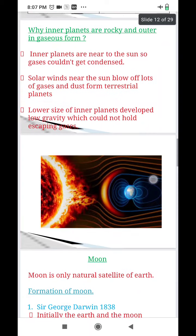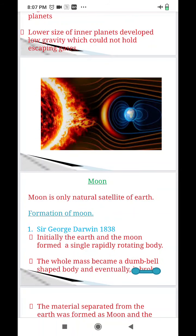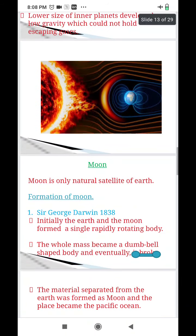Now, we will learn about the moon. As we know, moon is the only natural satellite of the earth. Now, there was some attempt to explain how moon was formed and one of those was by Sir George Darwin in 1838. He told that initially earth and moon formed a single rapidly rotating body.